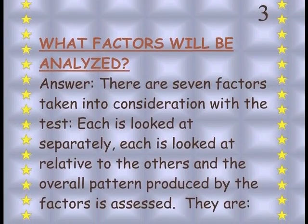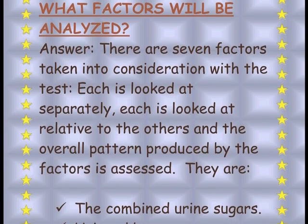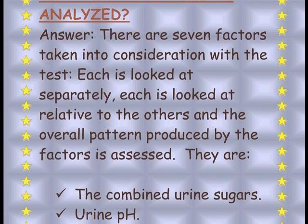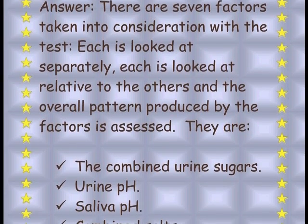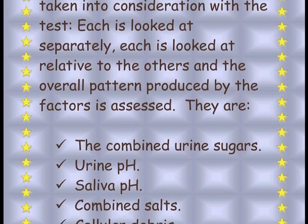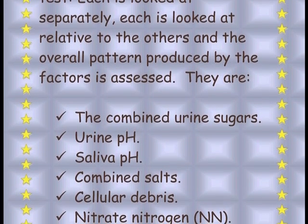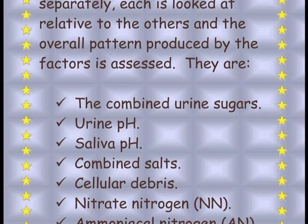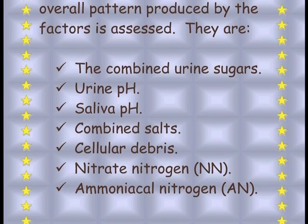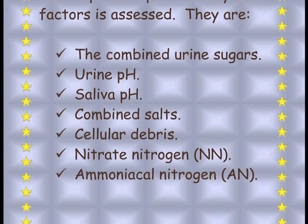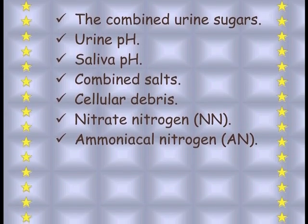What factors will be analyzed? There are seven factors taken into consideration with the test. Each is looked at separately, each is looked at relative to the others, and the overall pattern produced by the factors is assessed. They are: the combined urine sugars or brix, the urine pH, the saliva pH, the combined salts, the cellular debris, the nitrate nitrogen, and the ammoniacal nitrogen.